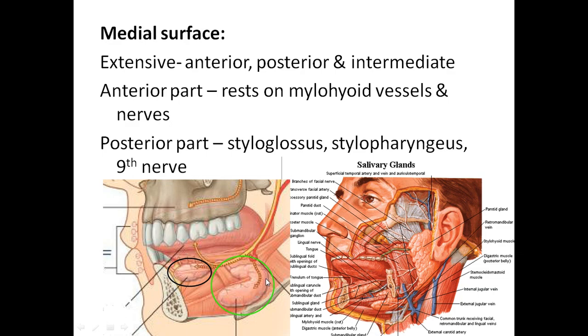The posterior portion of the medial surface is related to the styloglossus — running from the styloid process to the tongue — and the stylopharyngeus, which goes downwards to the pharynx, along with the glossopharyngeal nerve.